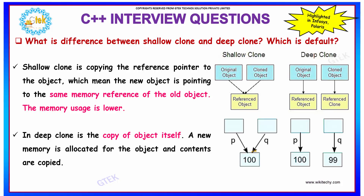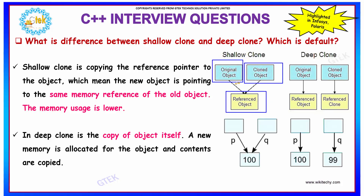What is the difference between shallow clone and deep clone, and which will be the default one? Shallow clone is nothing but copying the reference pointer of the object, which means the new object is also pointing towards the same memory reference of the old object, and the memory usage is hence lower. It will be accessing the same memory of the object which it is referring to.